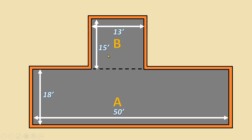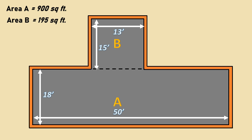Now we'll calculate the area of both portions. Area of portion A is 50 feet × 18 feet = 900 square feet, and area of portion B is 13 × 15 feet = 195 square feet. Our total surface area — that is portion A plus B — is 900 + 195 = 1,095 square feet. This is the total surface area of the hatched portion, that is the terrace surface area excluding the exposed surface of the parapet.